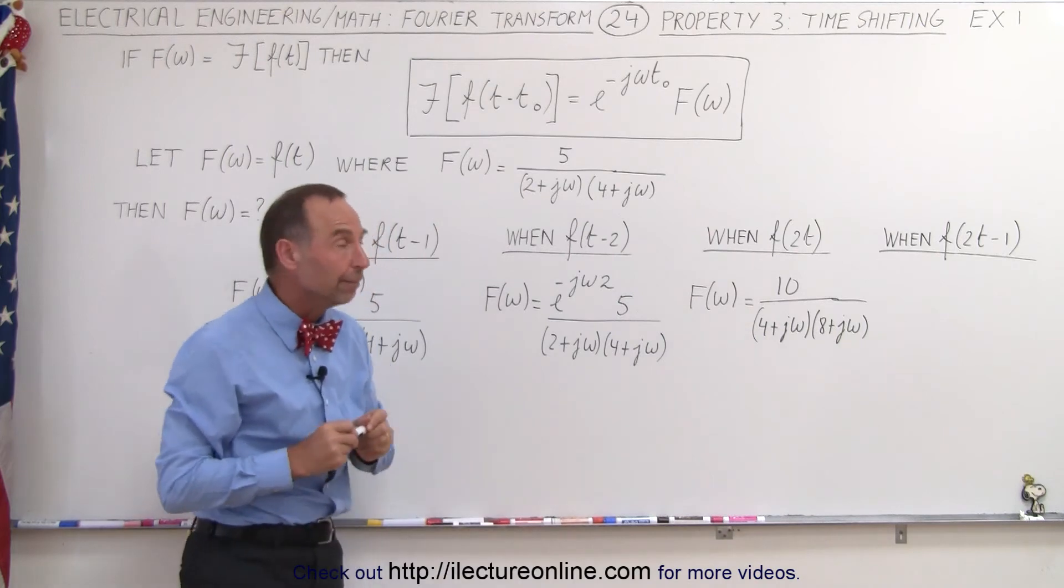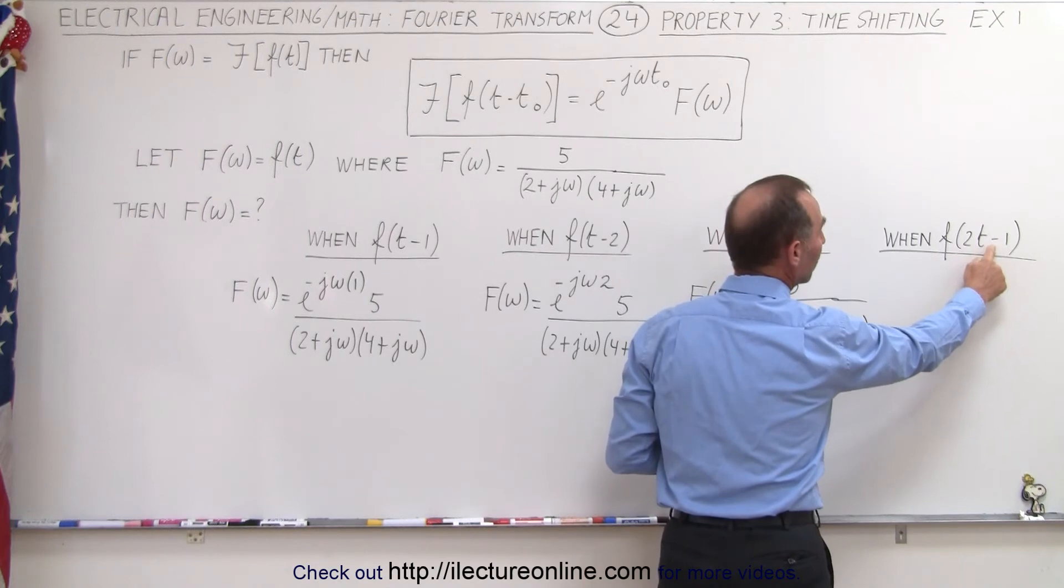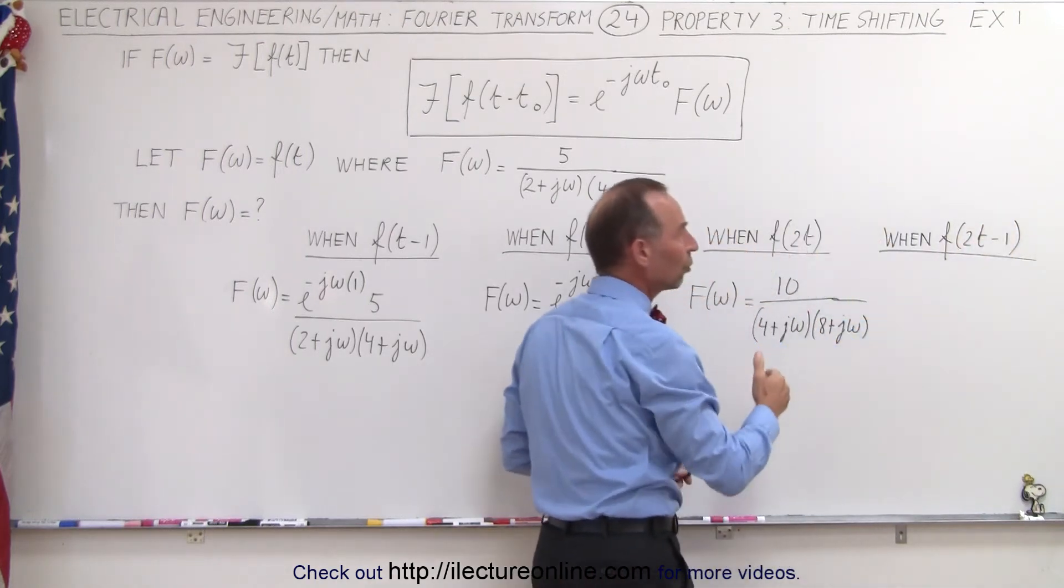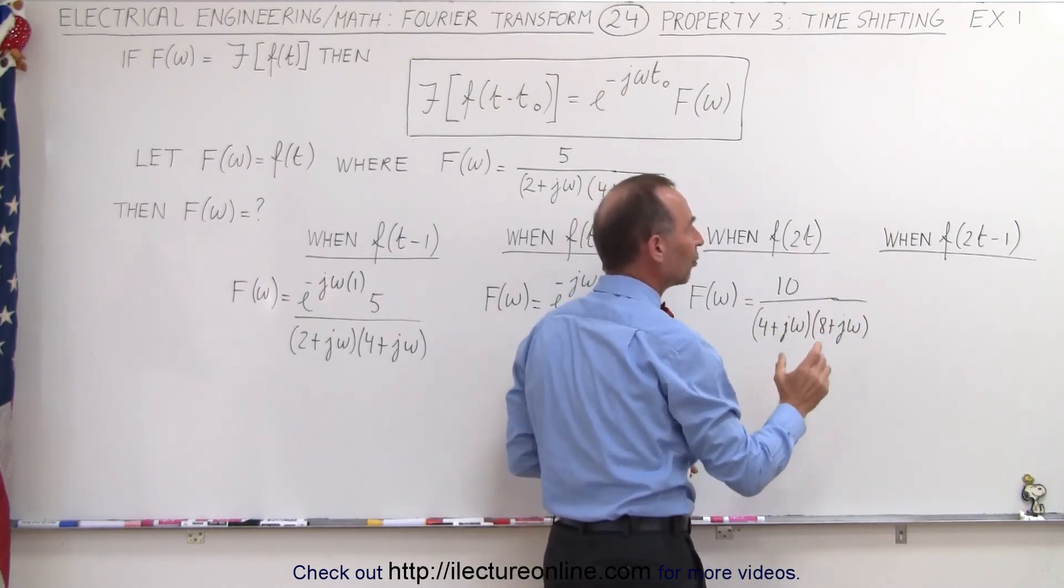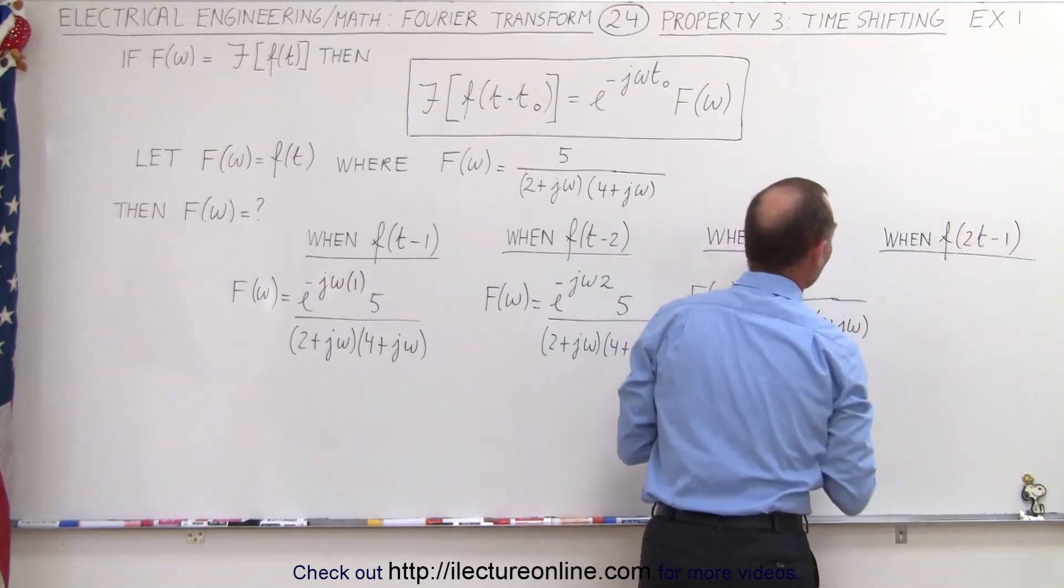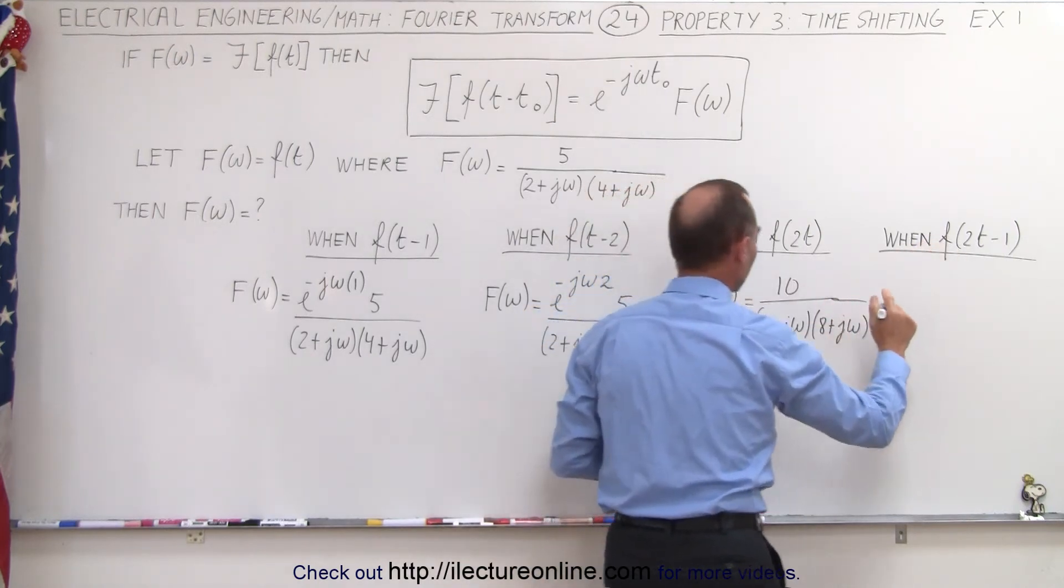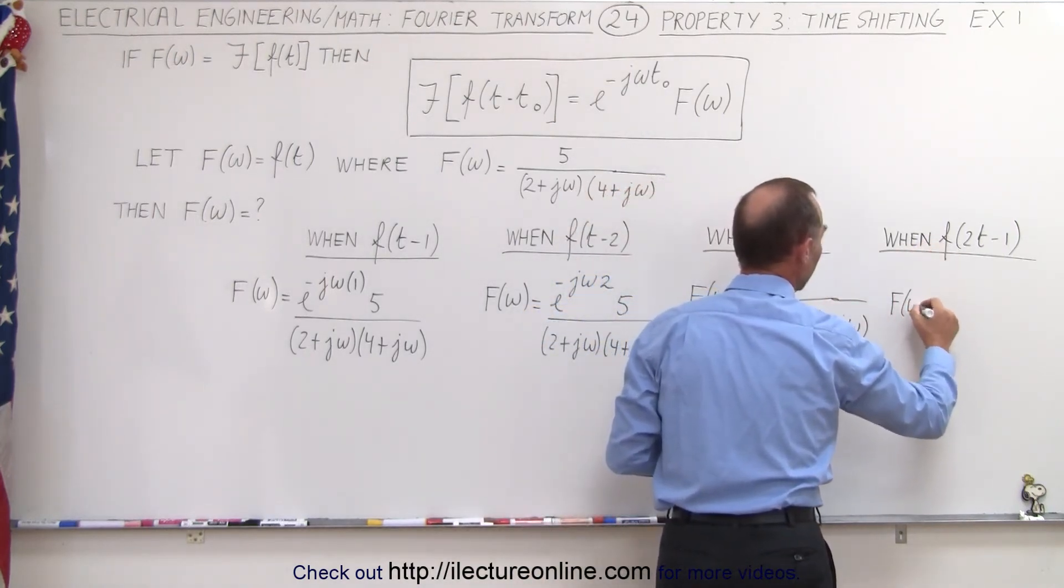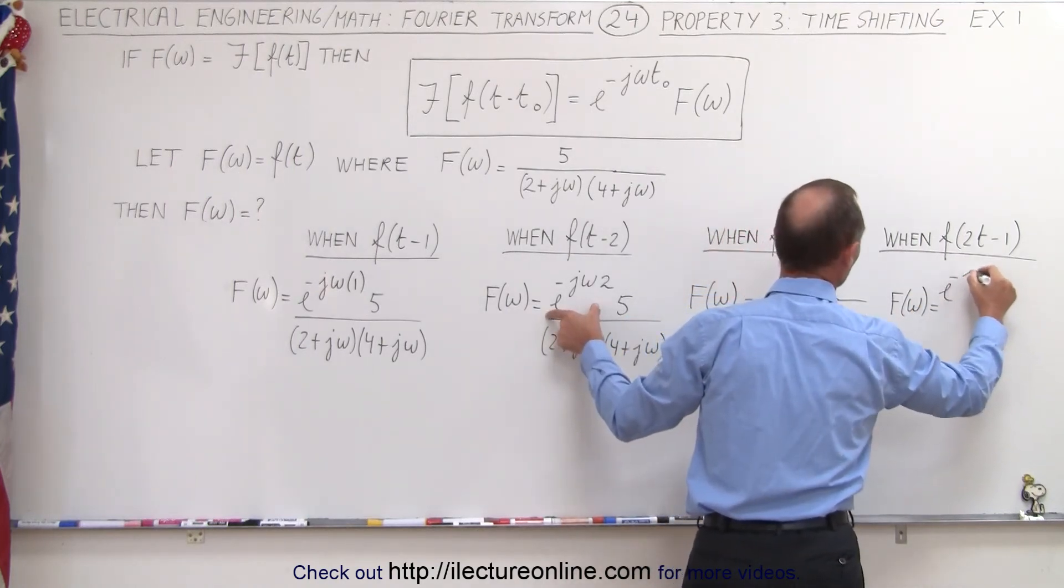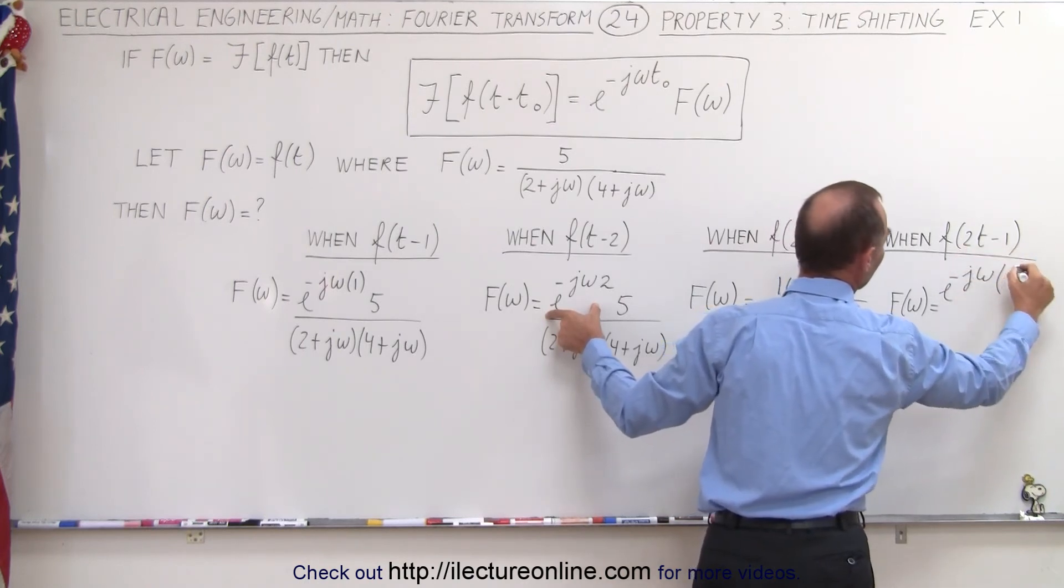And finally, what happens when we combine them? Now notice here that since we have two times t there, and now we subtract one unit from that, in effect that would be the same as t minus one-half. So two t minus one equals two times (t minus one-half). So that means that the time shift in this case will only be a half relative to this. And so now the result will look as follows: we will still get the change here, but now the shift will include the following. F of omega, the Fourier transform, will now be, again we plug this in here, e to the minus j omega, but now relative to the function f of two t, this becomes one-half.